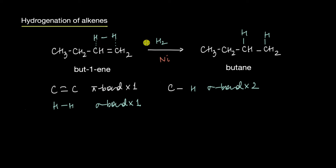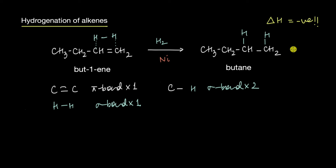In chemistry we calculate these changes under constant pressure and call it the change in enthalpy. The change in enthalpy is always going to be negative for this reaction — it is always exothermic — as it involves the breaking of weak carbon-carbon pi bonds and the formation of really strong carbon-hydrogen sigma bonds.